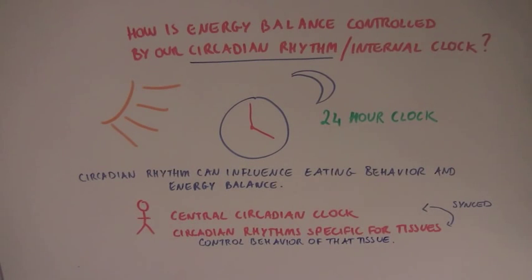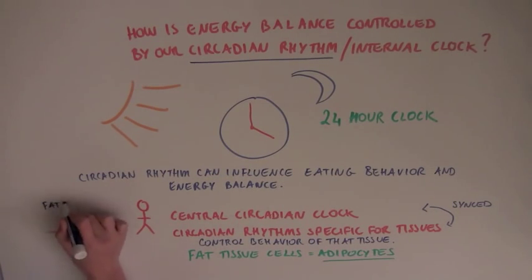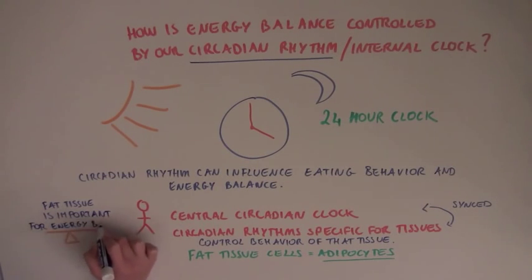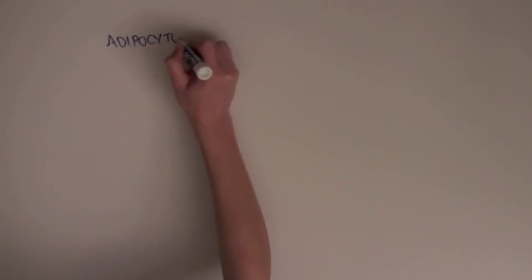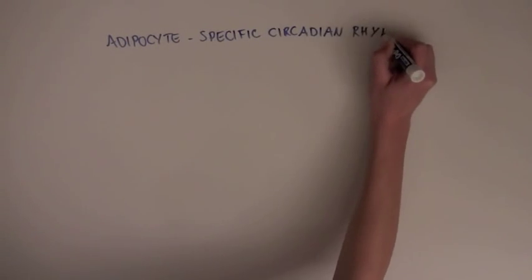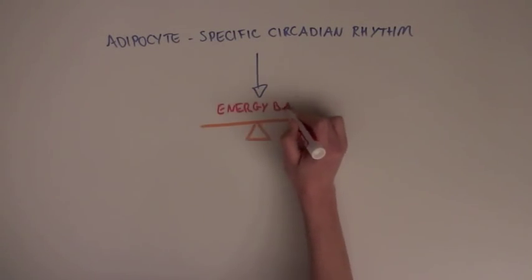The scientists of this article are interested in studying the circadian rhythm in the cells of the fat tissue, which we call adipocytes. Because energy is stored as fat, fat tissue plays a crucial role in energy balance. So, the scientists wondered what role this fat, or adipocyte-specific circadian rhythm, played in energy balance.